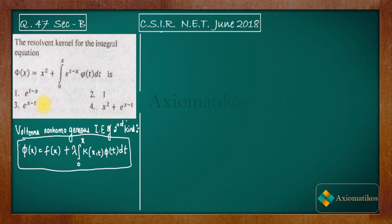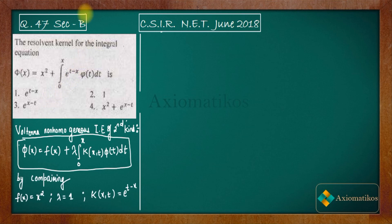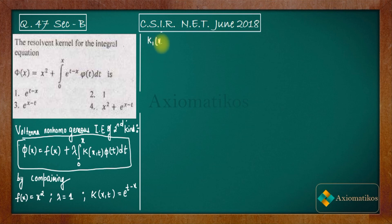Now let us find the resolvent kernel. It's an ongoing process. By comparing, we get the relevant components. The process is to first find k1, and k1(x, t) is simply k(x, t).